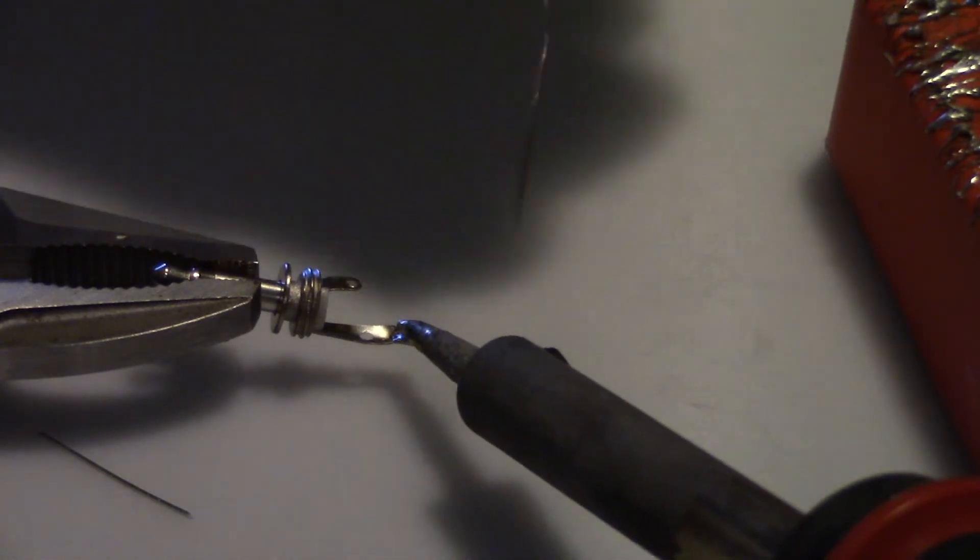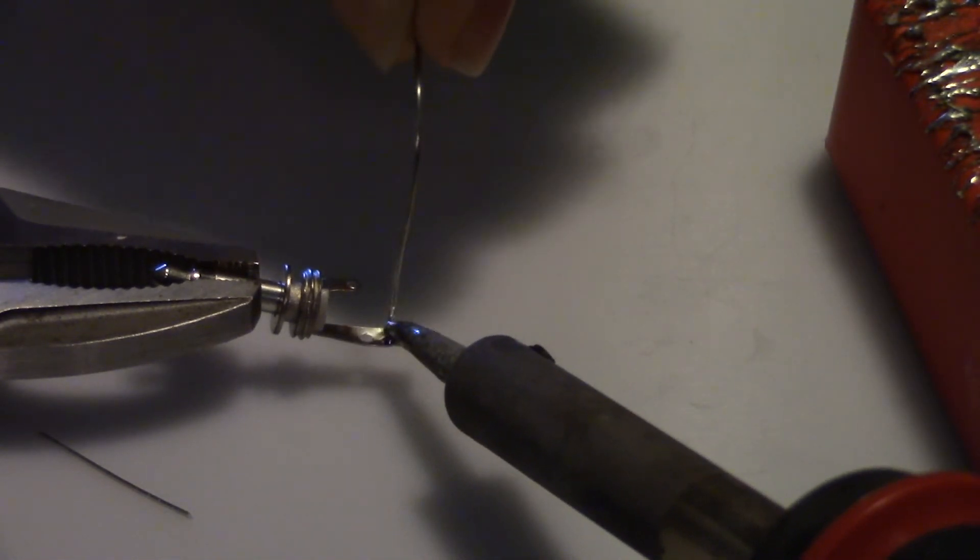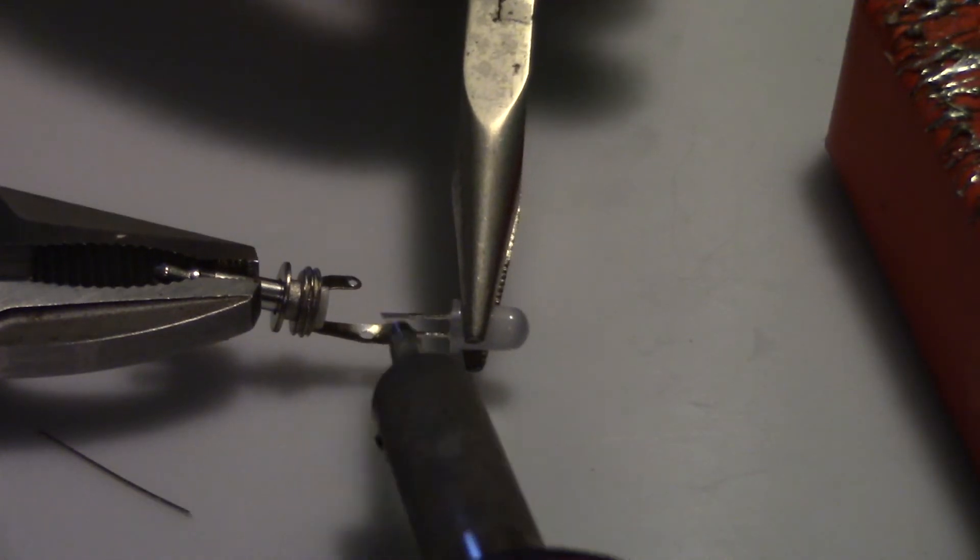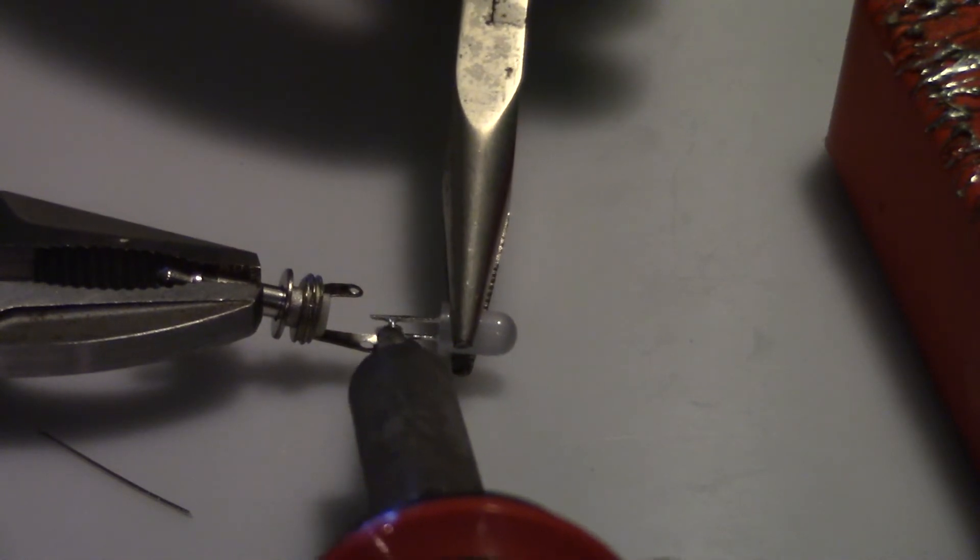Put some solder on the ground tab. Solder the LED so that the top of the flat spot on the LED's leg is even with the end of the ground tab.